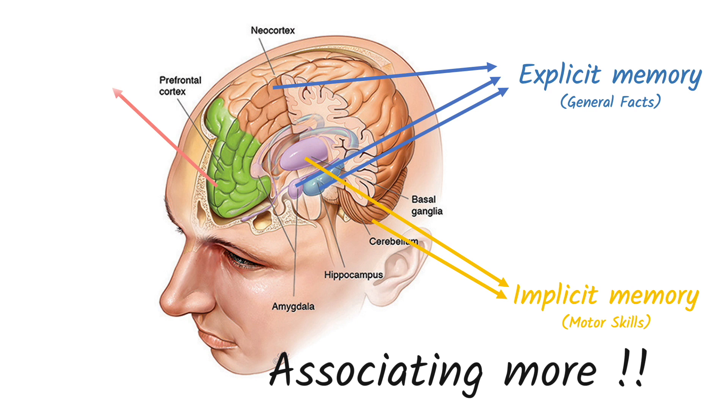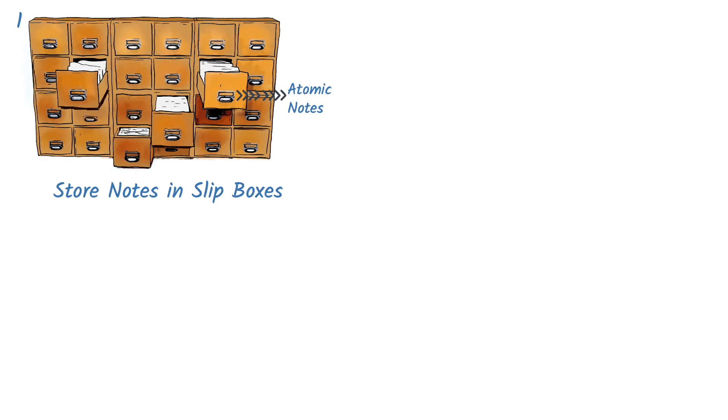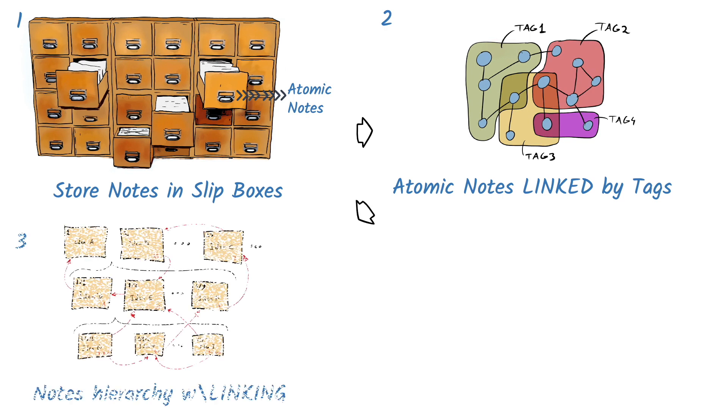Humans have an association cortex that allows us to come up with associations that other animals simply don't have the capacity to do. This forms the basis of memory which Harry Lorraine expands in his book Memory Power. So while the human brain has such capacity, it can be augmented by using note-taking methods like Zettelkasten or the Slipbox method which famous sociologist Nicholas Luhmann adopted to enable his prolific writing of his 70 plus books.